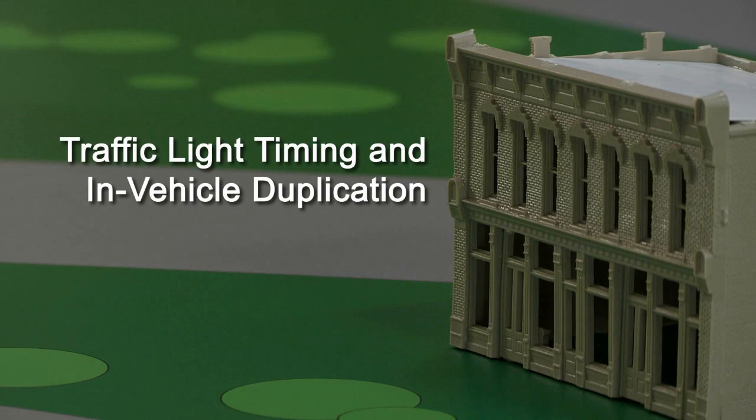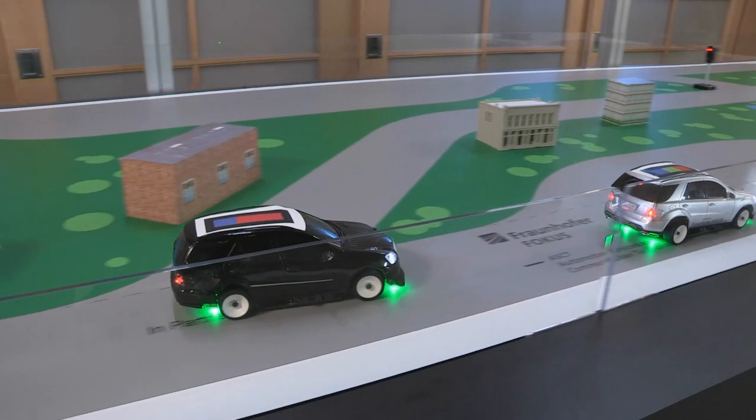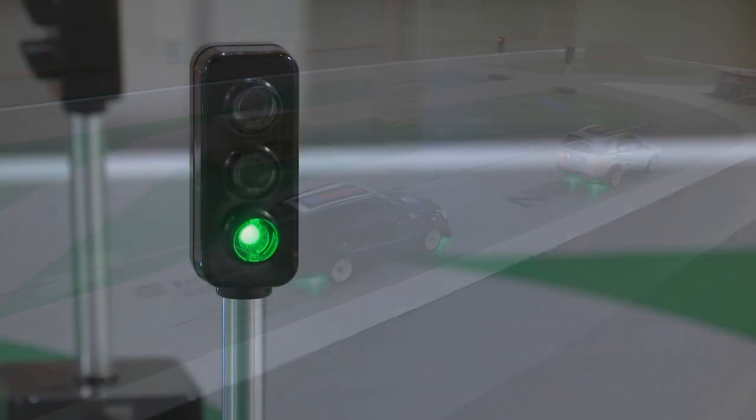The traffic light timing and in-vehicle duplication informs the driver how long it will be until the traffic light changes color. This use case is a vehicle-to-infrastructure example, also known as V2I.